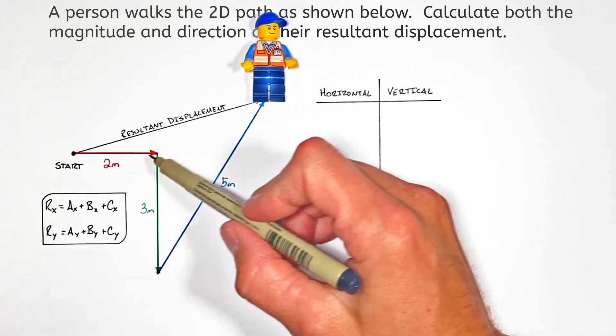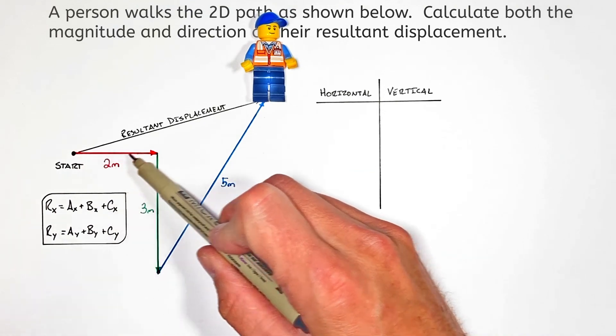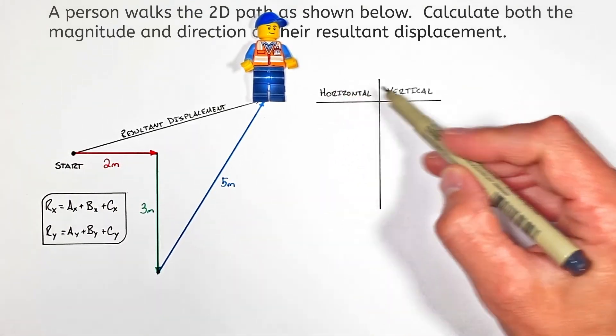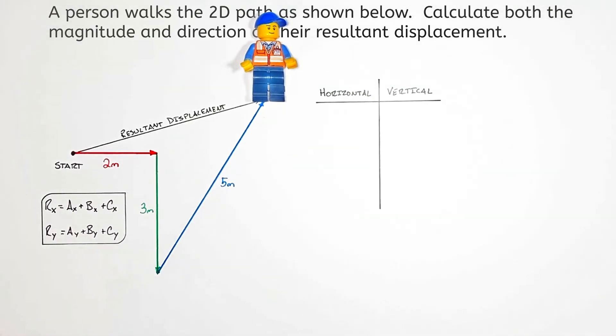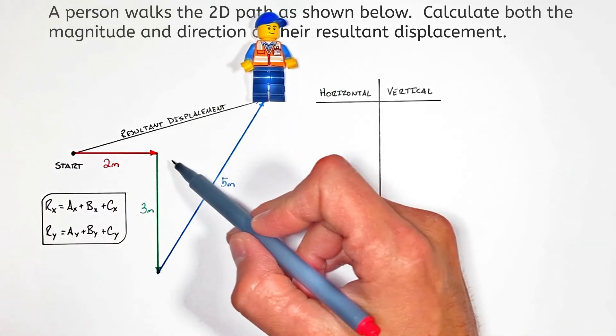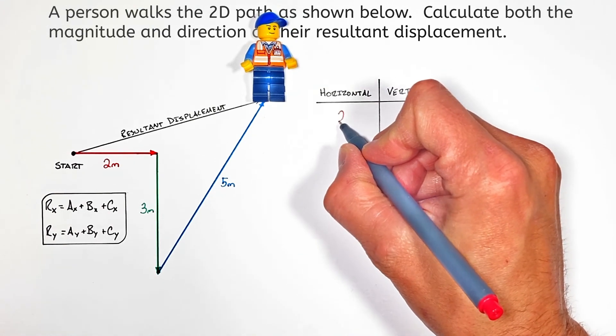When we're talking about vectors, we can talk about the components of a vector—really all that means is how much of a vector is either in the horizontal or vertical direction. Looking at this two meter displacement, it is entirely horizontal, so there's two meters of displacement horizontally.